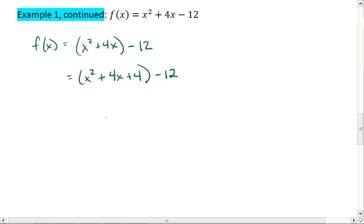But since I added 4 to the right side, I also want to subtract 4. So that if I was to simplify all of this, the 4s would cancel, leaving us with our original equation.